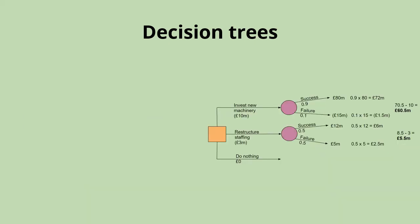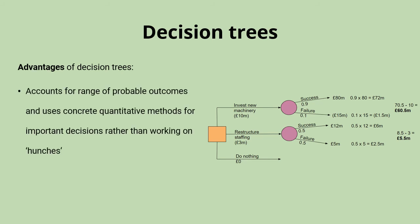Decision trees can be a really useful tool in the decision making process because they visually map out the range of different probable outcomes and they use quantitative forecasting to give us a more concrete basis for important decisions rather than just relying on hunches. That's particularly important if a decision turns out to be a failure, because you can at least justify your process. In this case, investing in the new machinery is clearly the option to go for.